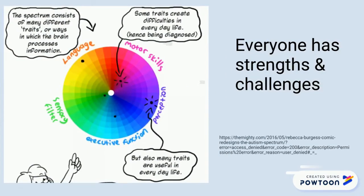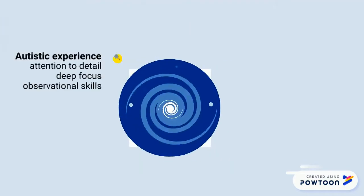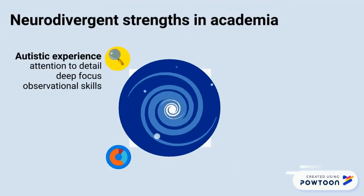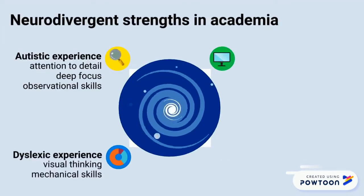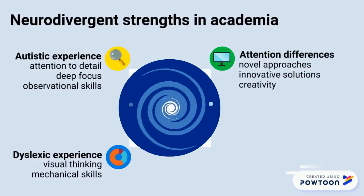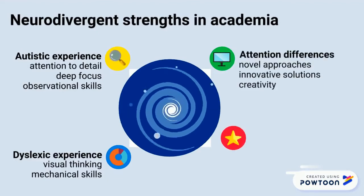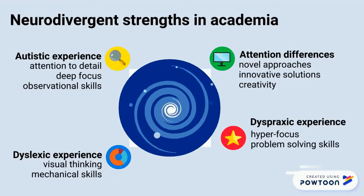Like everyone, neurodivergent people have strengths and challenges when interacting with the world. For autistic people, some of these challenges relate to sensory processing differences and differences in executive functioning. And while we should all be accommodating of neurodivergent challenges, it's important to remember the strengths too.